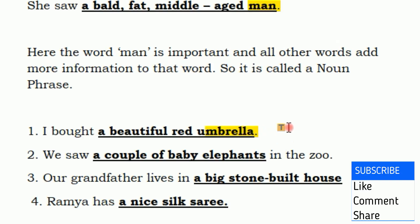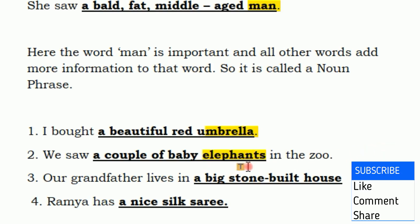The phrase is the noun phrase. Here is a couple of baby elephants. Except for the noun phrase — if the noun phrase is 'a couple of baby elephants,' it is known by the end noun. Here is the noun phrase. Let's check the noun phrase.